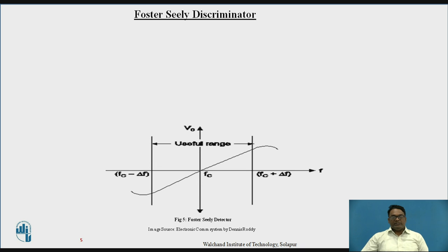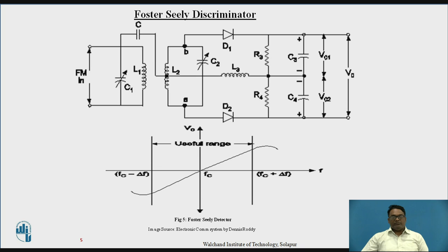This is the circuit for the Foster-Seeley discriminator or detector. This circuit is essentially a full wave rectifier from the secondary windings. The primary windings include a capacitor C1, which is a variable capacitor connected to the inductor from the secondary windings of the circuit.